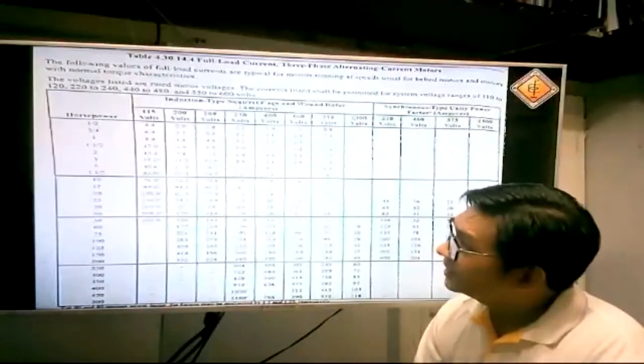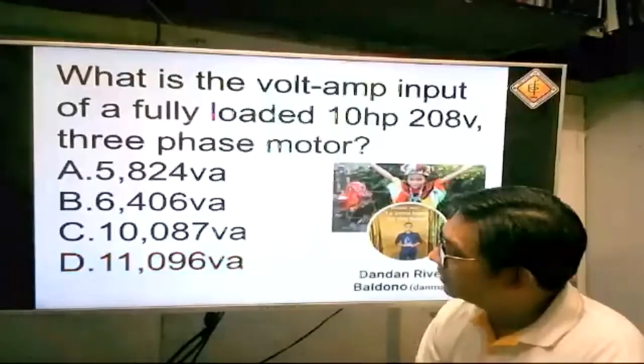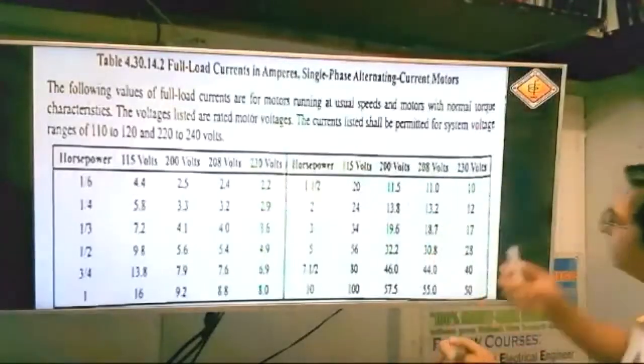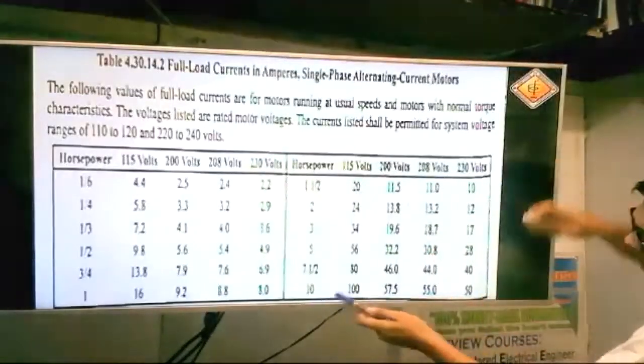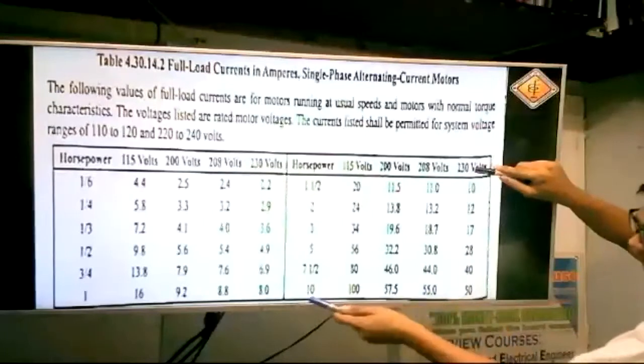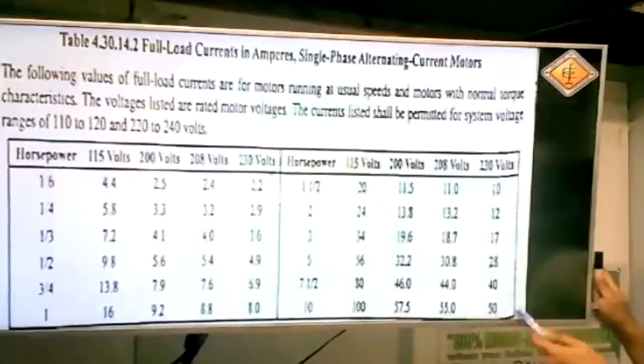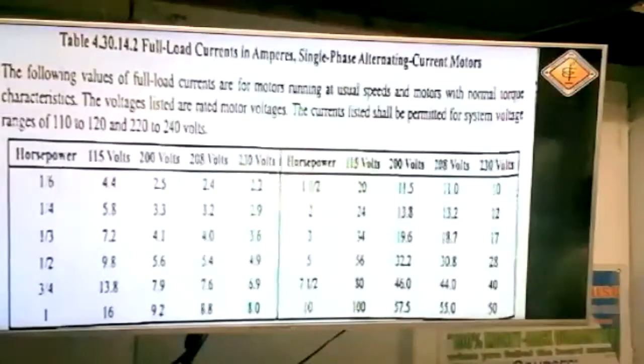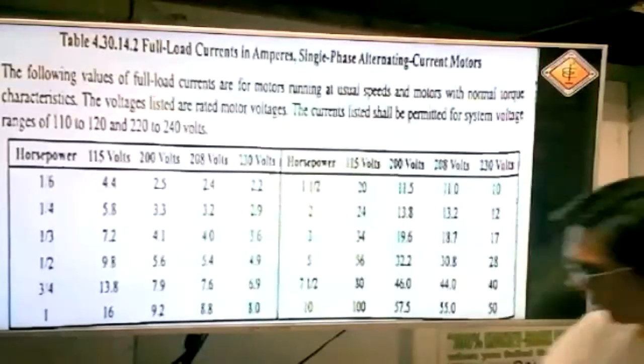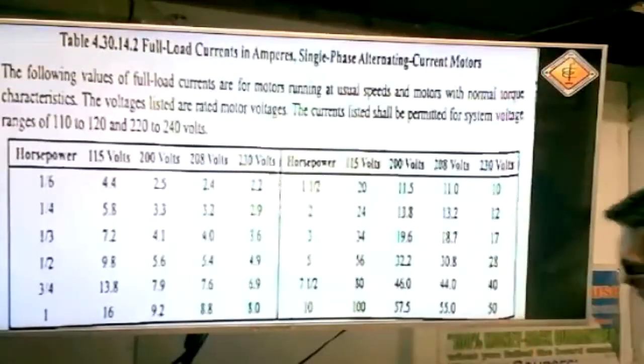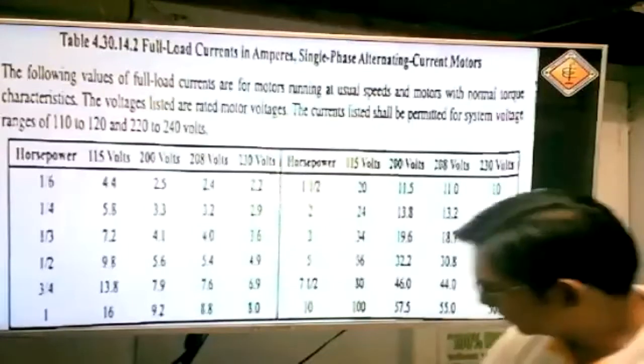Sino mas mababang kuryente? Si single phase o si 3 phase? With the same rating. Ayan, pakita ko kayo ha. Iba yung 10 horsepower natin kanina, sabi ko. Kung 10 horsepower, ilan ang ang pirahe pag single phase sa 230 volts? Tingin ha. Ito. 230, 10 horsepower. Ilan ang ang pirahe?